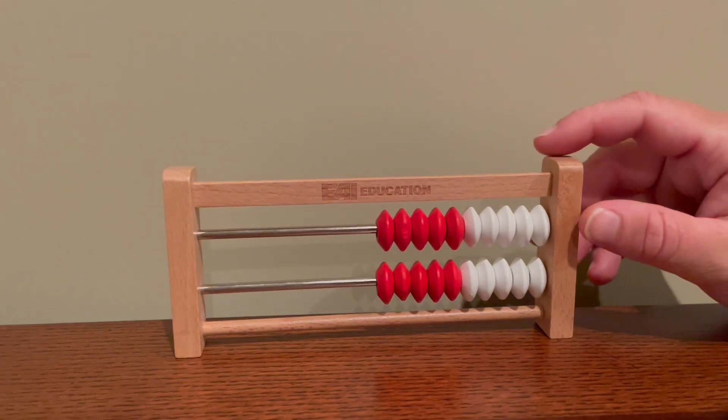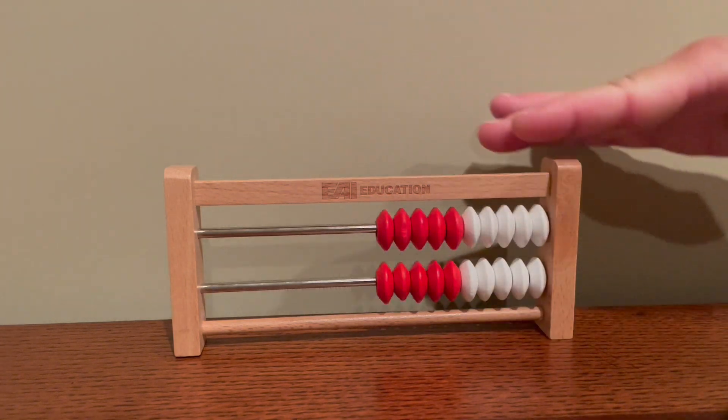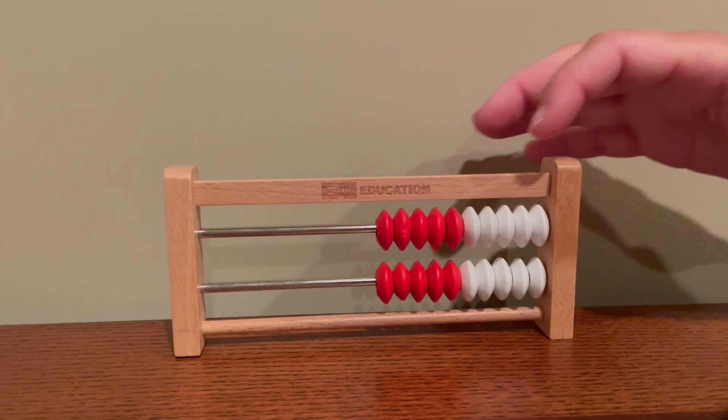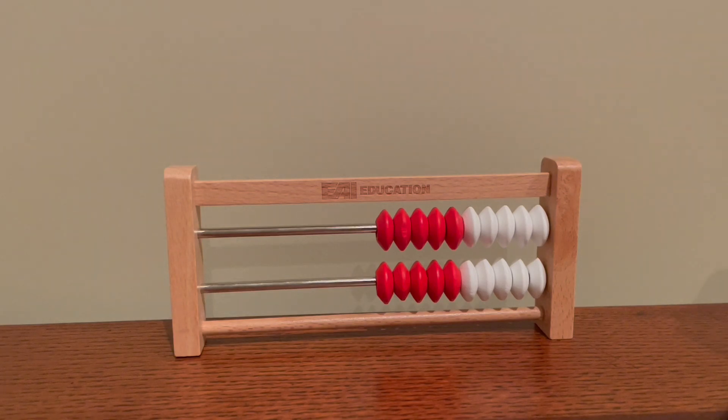We always start the number rack with this bar along the top and the white beads as well as the red beads pushed all the way to the right. We call this the starting position or sometimes where the beads are at rest. The white ones are on the right, the red ones are on the left.